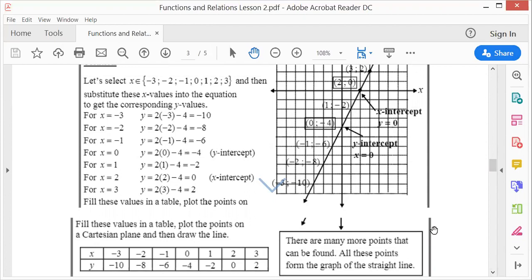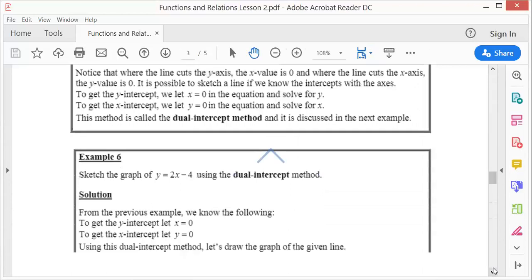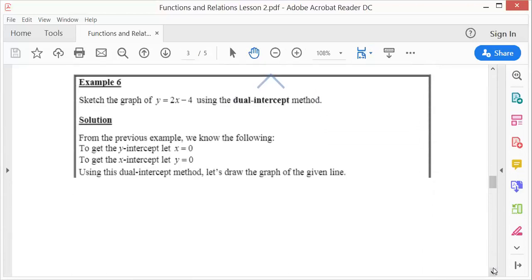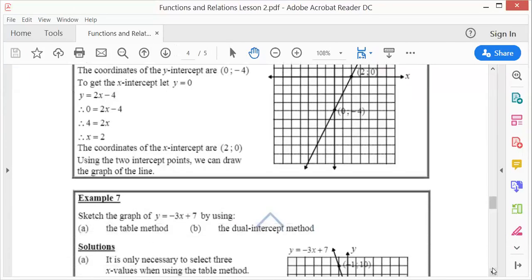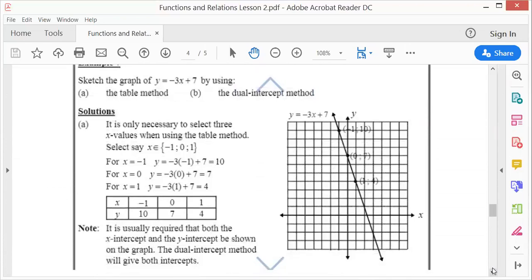Now in questions, Example 6, you must use now this dual intercept method. So you must let y, to find the y-intercept let x be 0, to find the x-intercept let y be 0. And if you do it here, there you are. If x is 0, y is minus 4, so there you are. If y is 0, x is 2, and that's all you need to draw the graph. So the dual intercept method is actually easier.